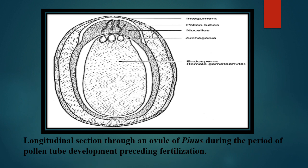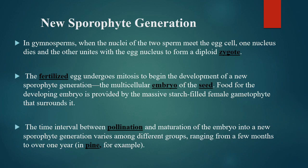You can observe the longitudinal section through an ovule of pinus during the period of pollen tube development. Labels include: pollen tube, nucellus, archegonia, endosperm, and new sporophyte generation.